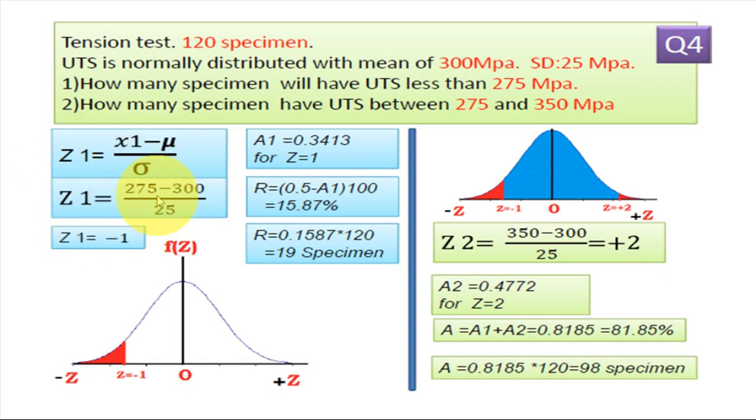So z1 equal to x1 is 275 minus mean value is 300 MPa upon standard deviation 25. So z1 comes minus 1. Now the area from 0 to minus 1, we find out with help of the chart. So we draw this curve, put down limit here, minus 1. So 0 to minus 1, how much is the area?